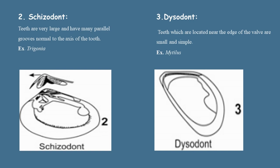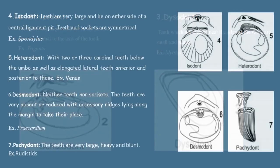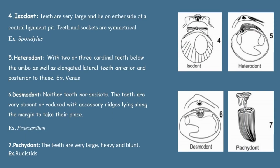Dysodont: teeth which are located near the edge of the valve are small and simple. Mytilus is an example of dysodont. The next type is Isodont: teeth are very large and lie on either side of a central ligament pit. In this type, teeth and sockets are symmetrical. An example is Spondylus.